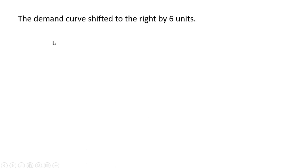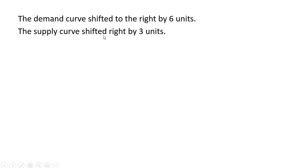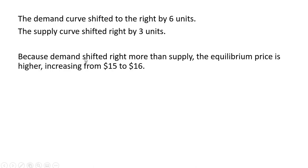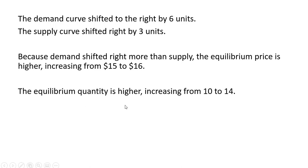To recap: the demand curve shifted to the right by six units, and the supply curve shifted right by three units. Because demand shifted right more than supply, the equilibrium price is higher — it increased from $15 to $16. The equilibrium quantity is also higher, increasing from 10 to 14 units.